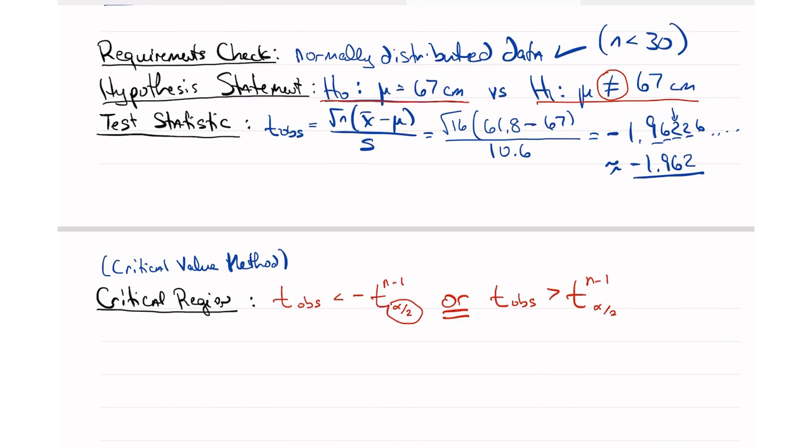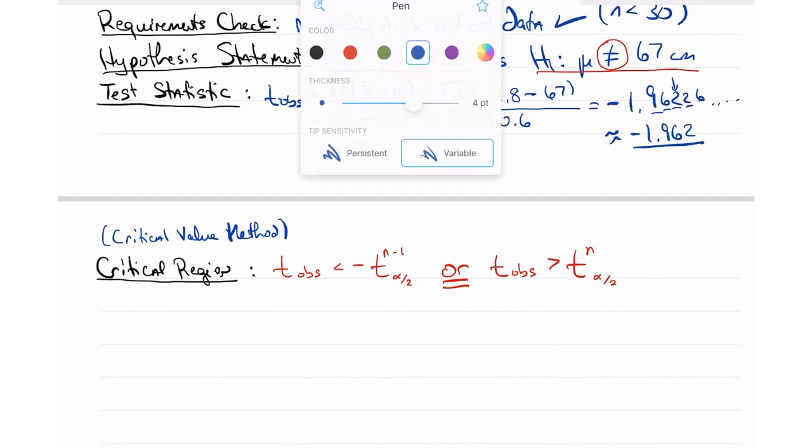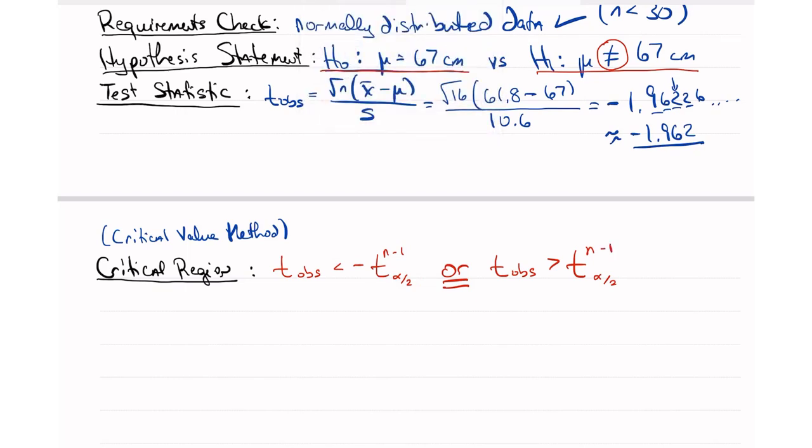So, we're going to say that this is alpha divided by 2. So, that's telling us that we need to calculate alpha over 2. And this is telling us that we need n minus 1 degrees of freedom.